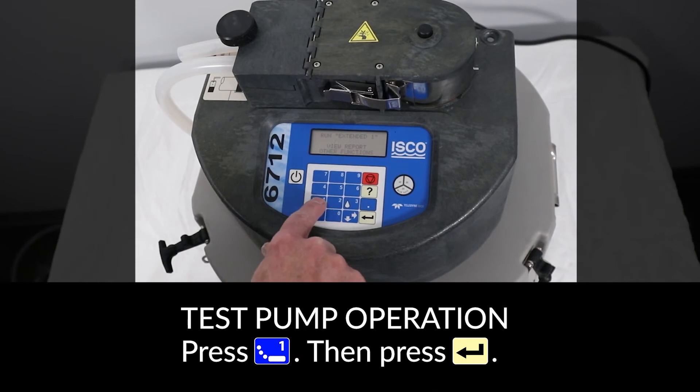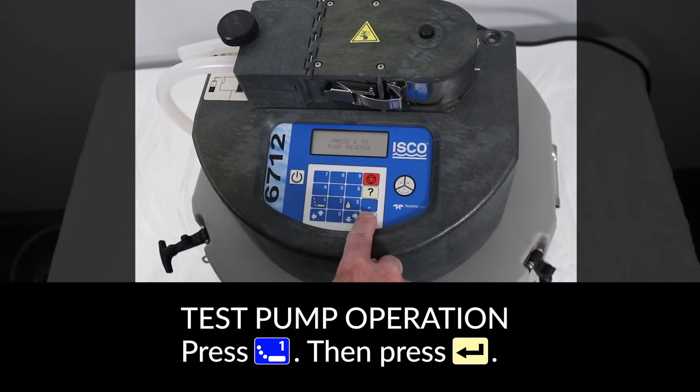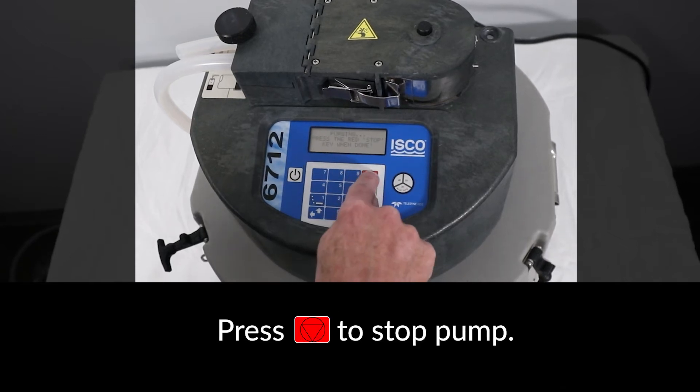To test the pump operation on the new tube, press the 1 button on the control panel to run the pump in reverse direction and press enter. Press the red stop key to stop the pump.